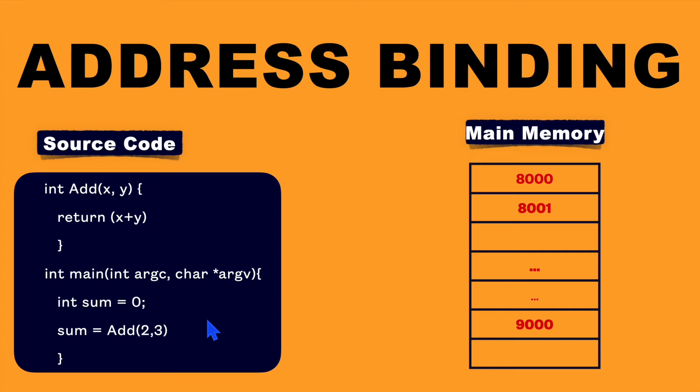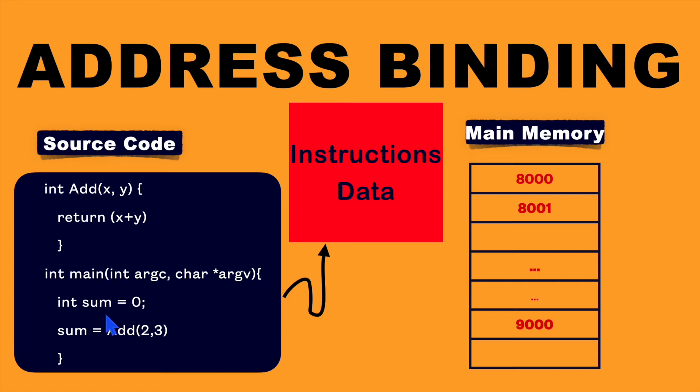To do that, we need to first map these instructions and data for this source code to the actual absolute main memory or RAM memory.